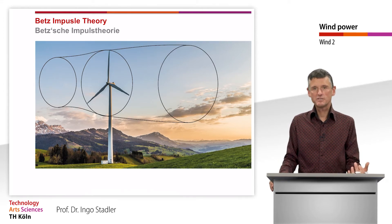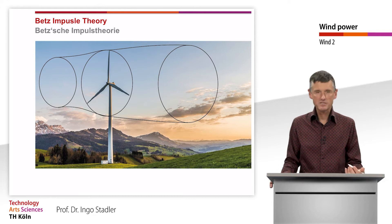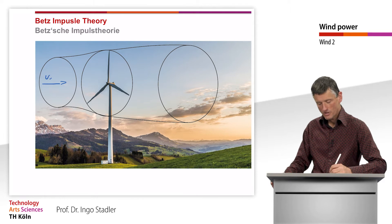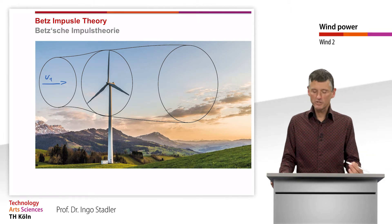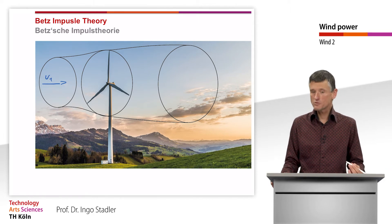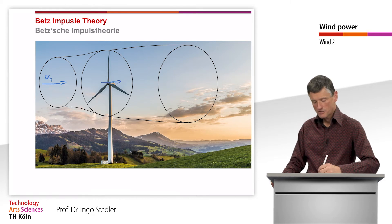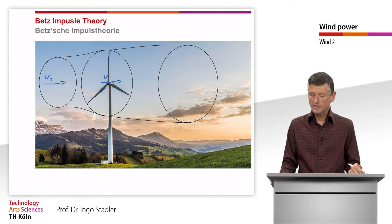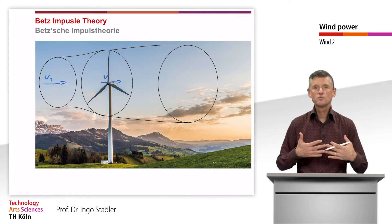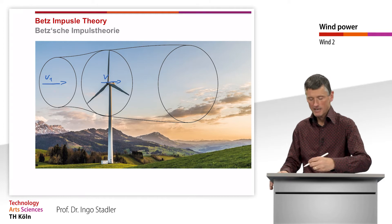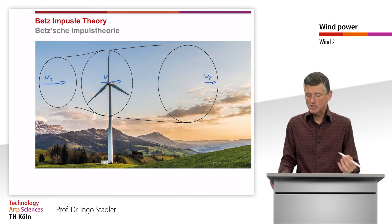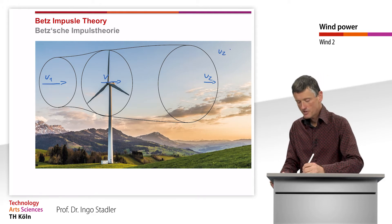As a consequence, it looks much more like we see here. We assume that the wind V1 approaching the wind turbine is quite large. Then the wind speed at the wind turbine itself is V. And when we have slowed down the wind, definitely behind the turbine, the wind velocity V2 must be slower. So we have V2 that is lower than V1.